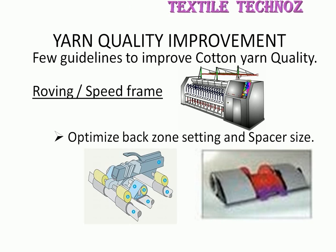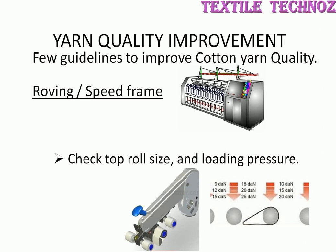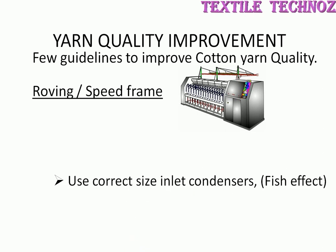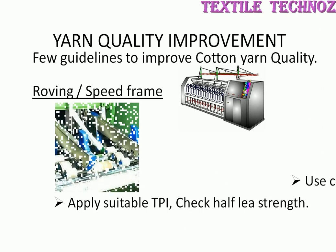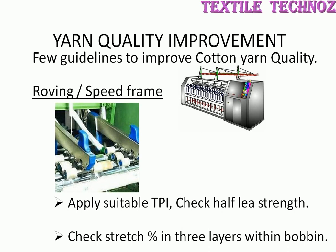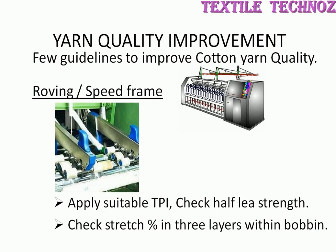In roving or speed frame, optimize back zone setting and spacer size. Check top roll size and top roll loading as per recommendation. Use correct size of inlets to avoid fish effect. Apply suitable TPI to check half-lap strength seasonally. Check stretch percent of bobbin in 3 layers.